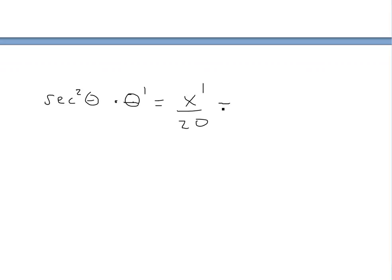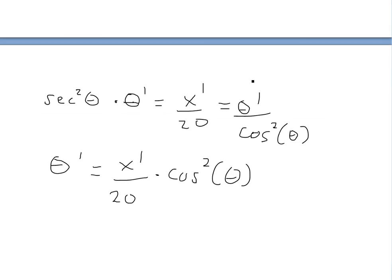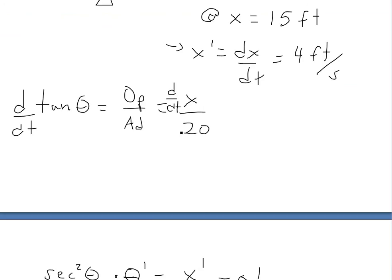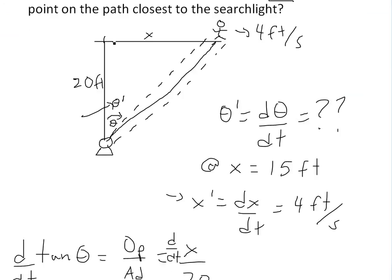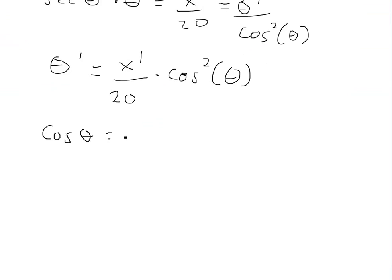Remember, secant squared can also be written as 1 over cosine squared theta. So if we solve for theta prime, we get theta prime equals x prime over 20 times cosine squared theta. So now we have to solve for cosine theta. Looking back at this triangle, cosine is by definition equal to adjacent over hypotenuse. The adjacent in this case is 20, and the hypotenuse we'll call z, so cosine theta equals 20 over z. We need to solve for z.